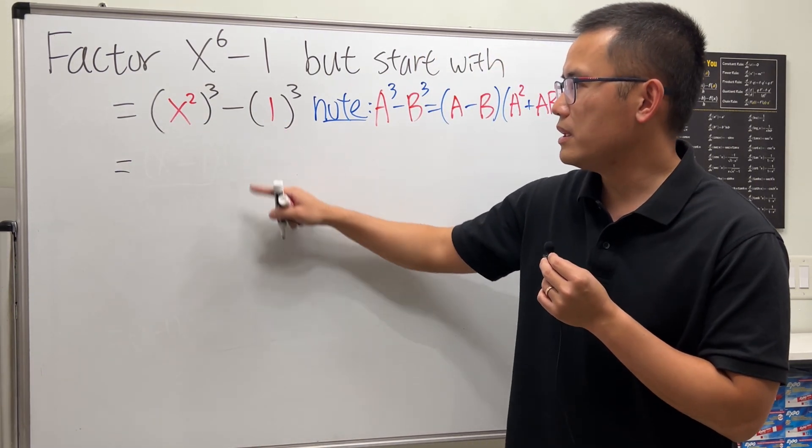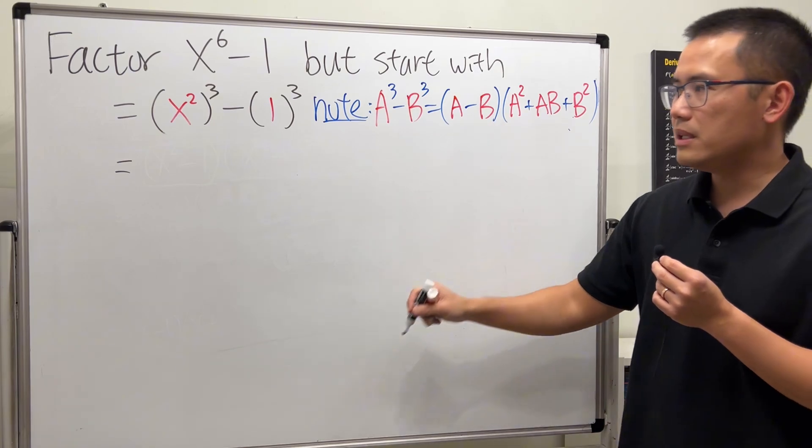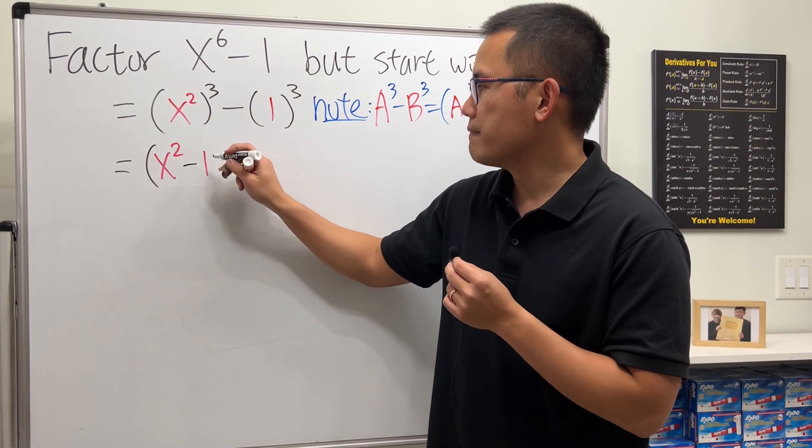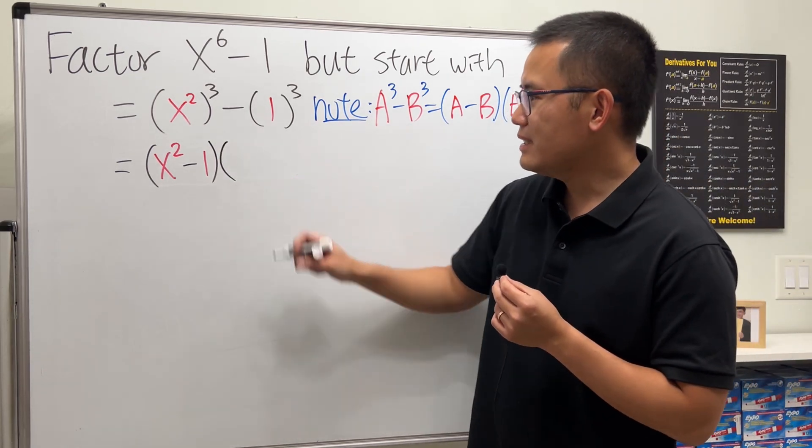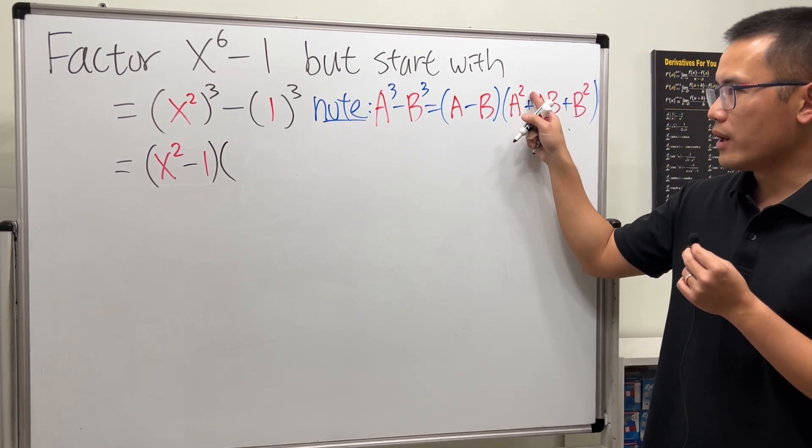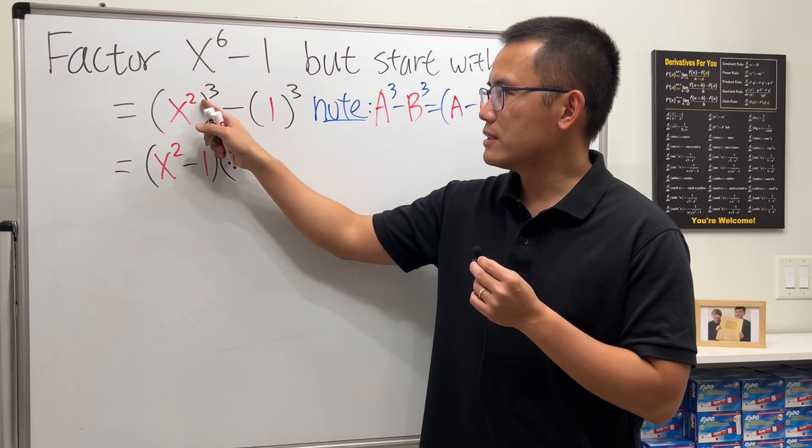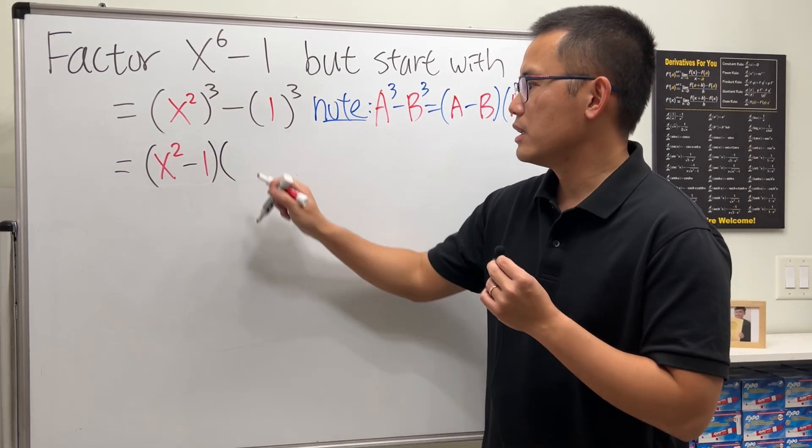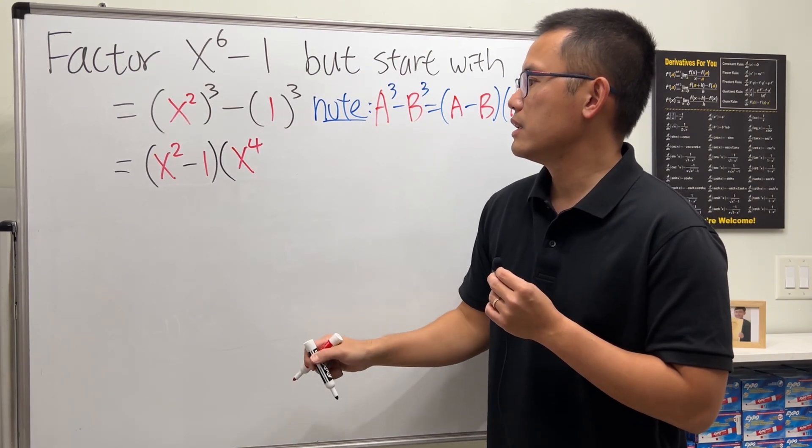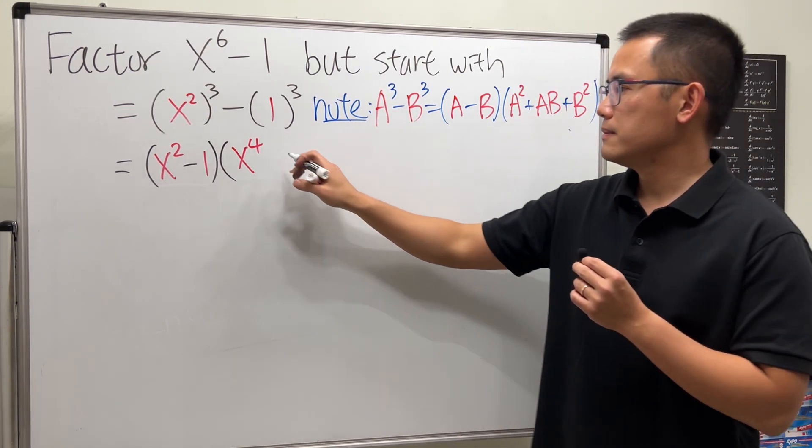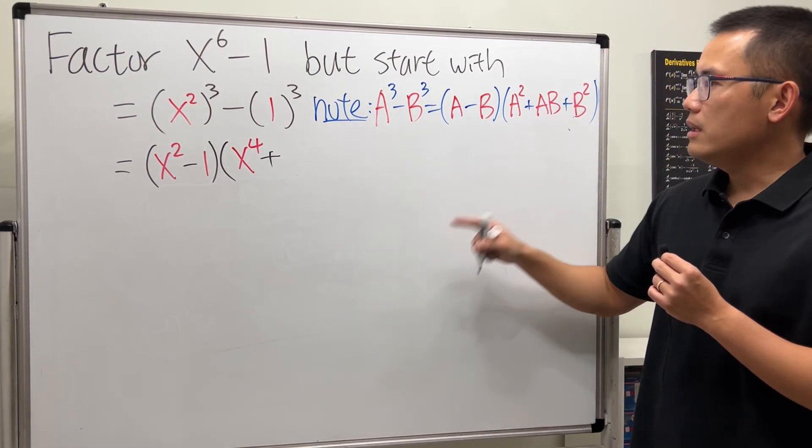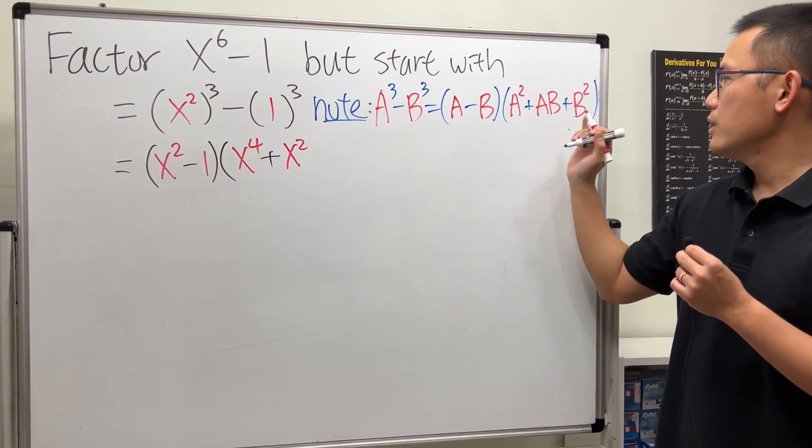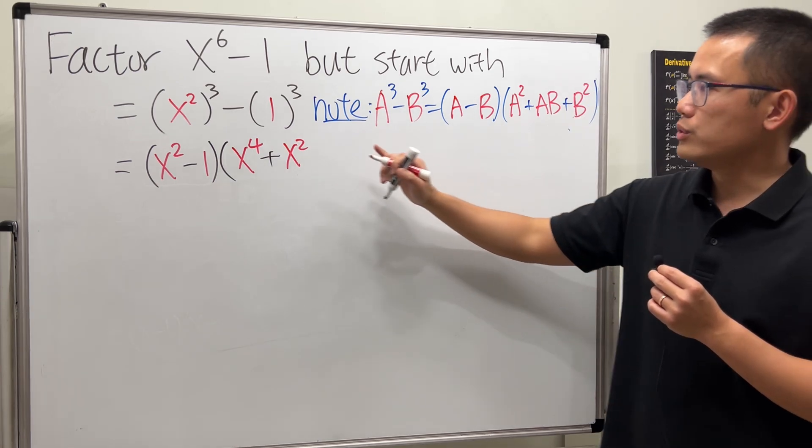So here we go, this is our a, this is our b. We will have a minus b, so we get x² minus 1, not bad. Then we are going to have a², so we have to square this: x² squared, we multiply the powers, we get x⁴. And then it's a plus ab, so it's this times this which is just x². And lastly we do b² which is 1² and that's just equal to 1.